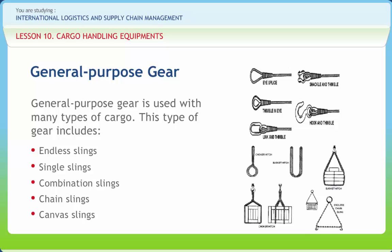Splicing the ends of a piece of wire or fiber rope makes an endless sling. A single sling is made of fiber or wire rope. Each end of the single sling is made up with an eye, a hook, a ring or a thimble, depending on the intended use of the sling.